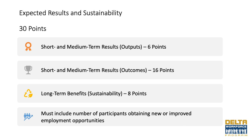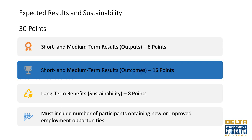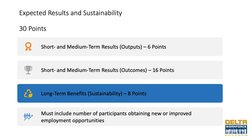The expected results and sustainability portion of the application must clearly state expected project results that are specific, measurable, achievable, and reasonable according to the project design and timeline. This section is worth 30 points. Project results must include short and medium-term results with outputs and outcomes achieved by the end of the grant period, and long-term benefits with outcomes expected five or more years after the end of the grant period to demonstrate sustainability. All project results must clearly align with the needs, gaps, or challenges identified in the statement of need and the activities identified in the project description.